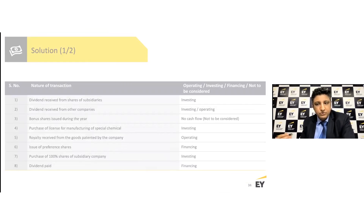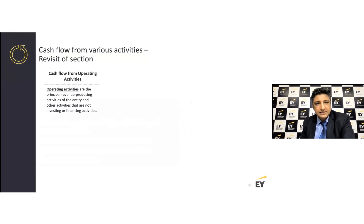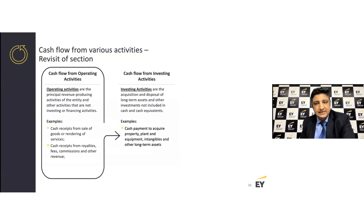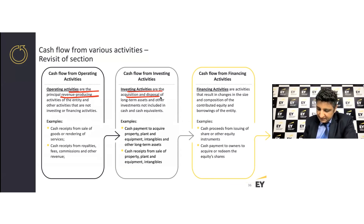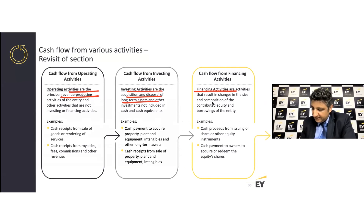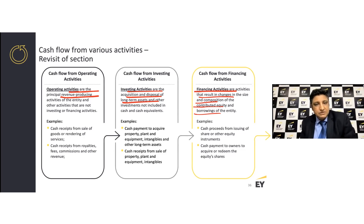To quickly revisit: cash flows from operating activities refer to the principal revenue-generating activities. Investing activities relate to the acquisition and disposal of long-term assets and investments. Financing activities are those which change the composition of your capital structure — equity, preference shares, debentures, bonds, bank loans — they are all examples of financing activities.